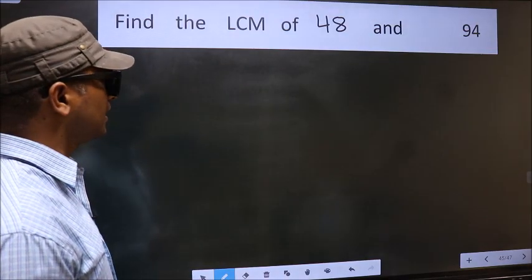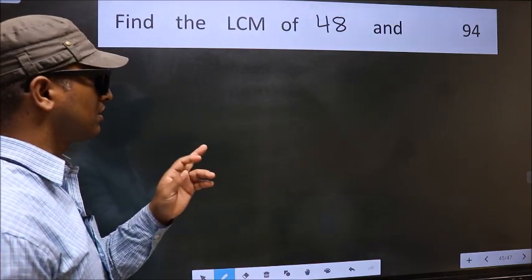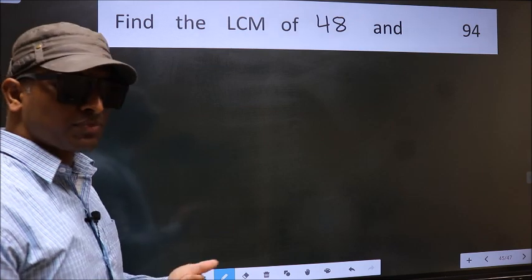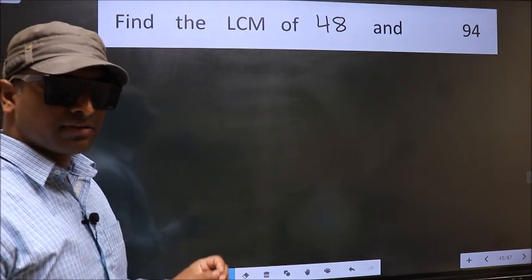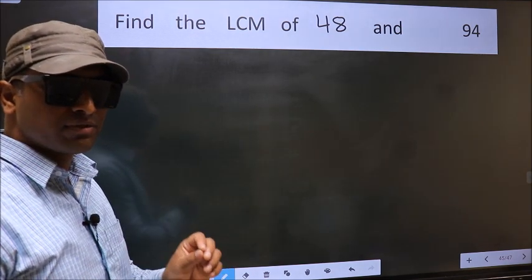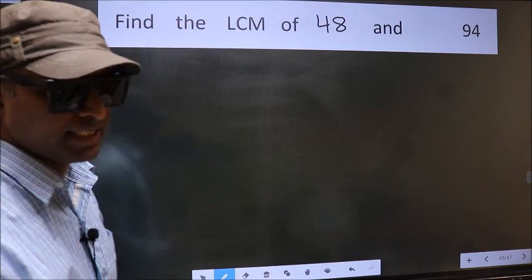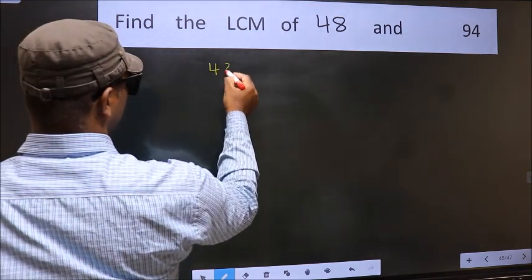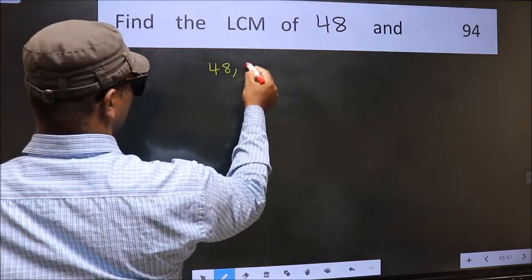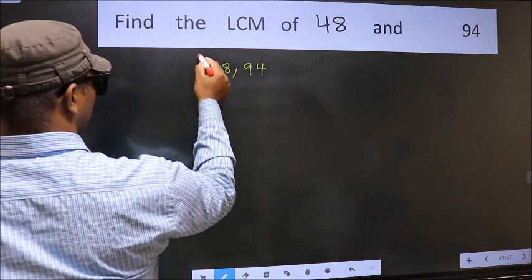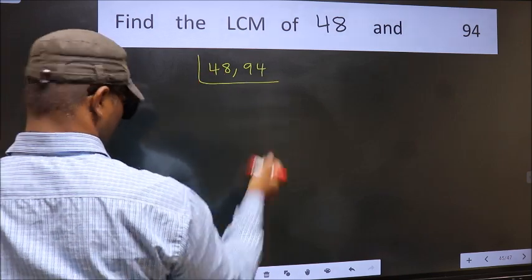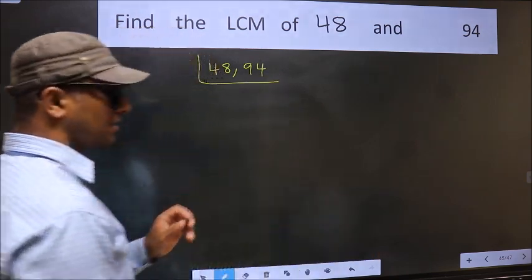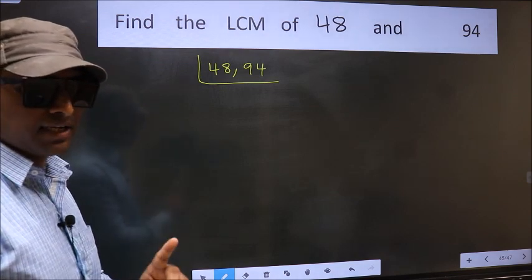Find the LCM of 48 and 94. To find the LCM, first we should frame it in this way: 48, 94. This is step 1.